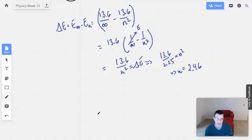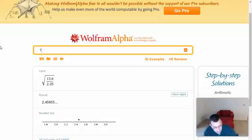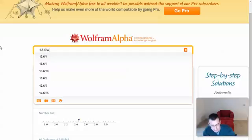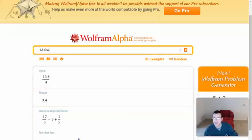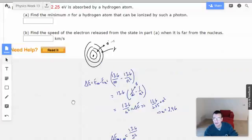So, change in energy from n=2 to infinity would equal 13.6 over 2 squared. So if we ionize something from the second state to infinity, this is what it would be. It would be minus 13.6 divided by infinity, but I'm going to call that 0. If I do 13.6 divided by 4, it should give me a number that's bigger than the amount of electron volts I'm allowed.